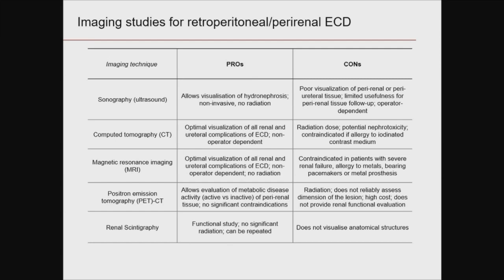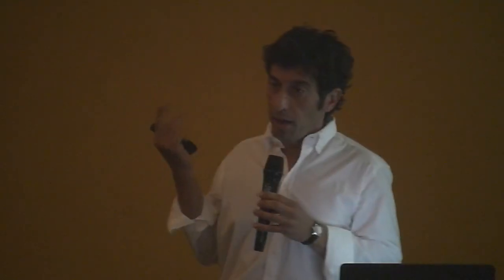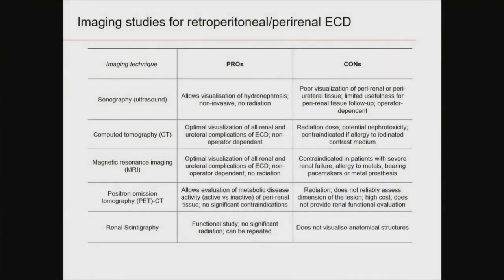To visualize and understand the extent of infiltration around the kidneys and the functional consequences, we have different types of examinations that can be used alternatively or together depending on your purpose. Sonography is certainly a first-line examination — it's non-invasive, cheap, causes no harm, and no radiation. It's able to detect whether the kidneys are dilated or suffering, but it doesn't give us all the details that CT provides. Computer tomography is very good to visualize all the anatomical details of the infiltration around the kidneys, the collecting system, and the whole abdomen.